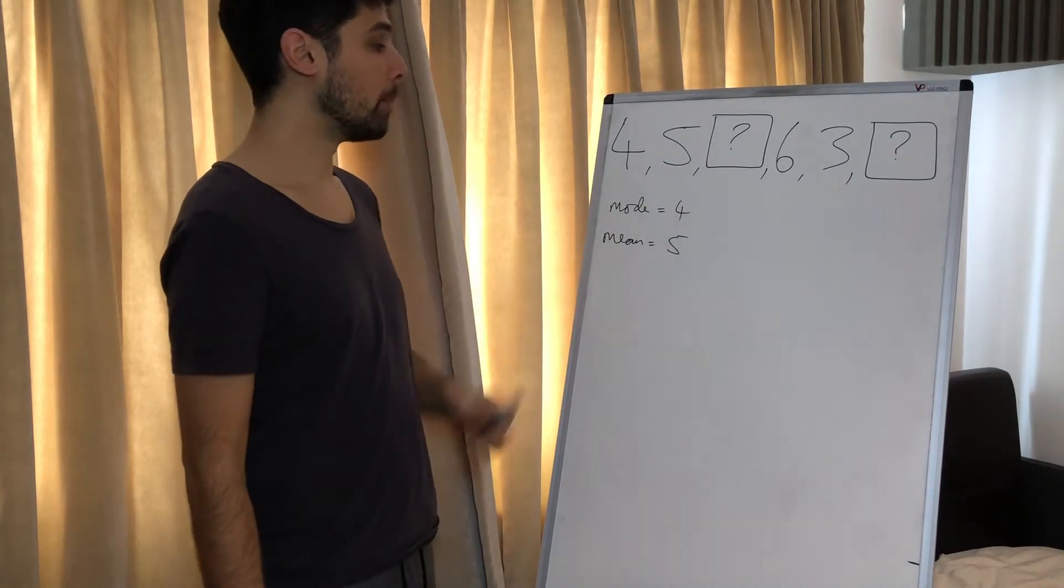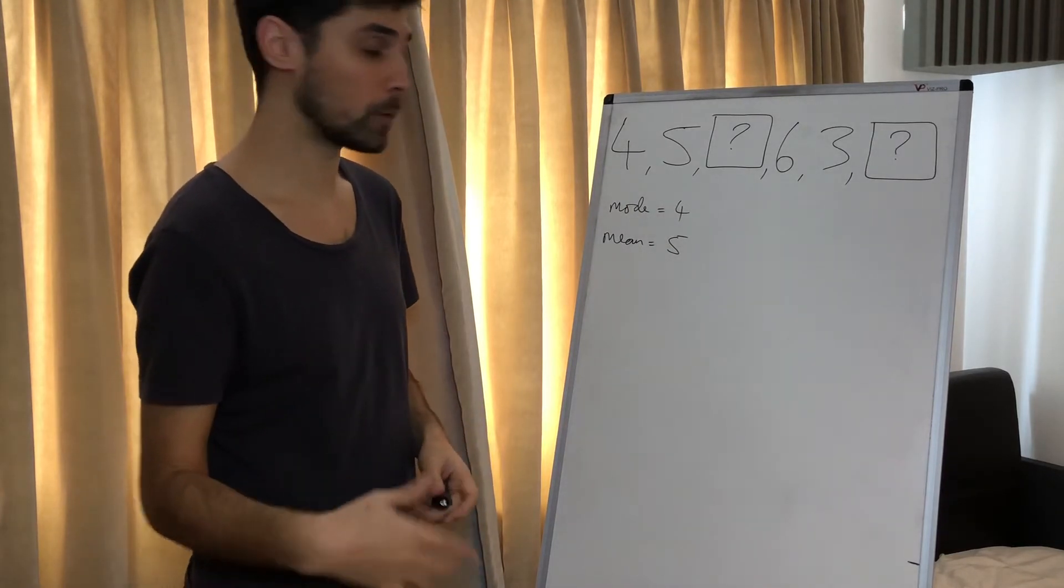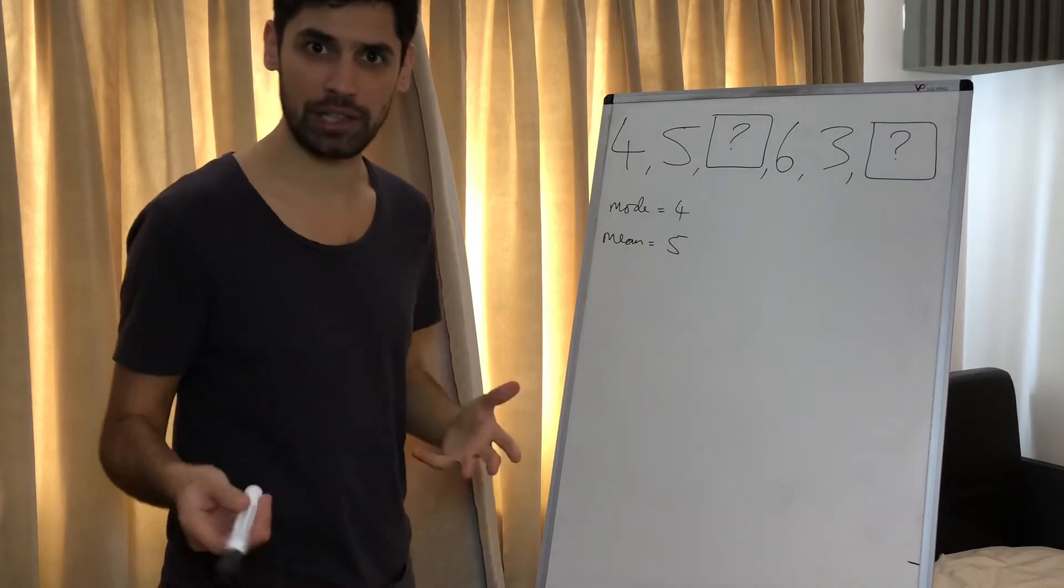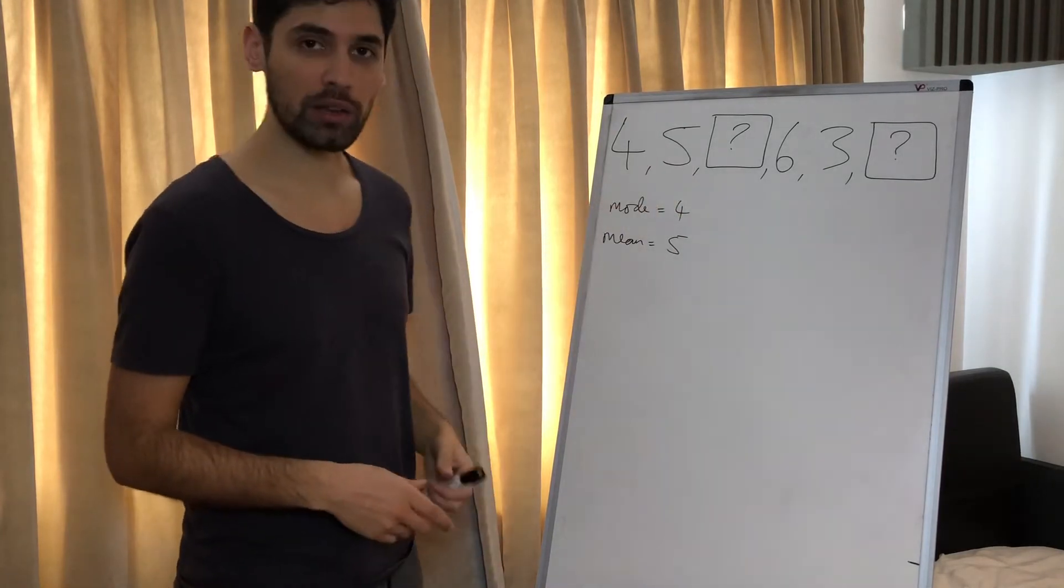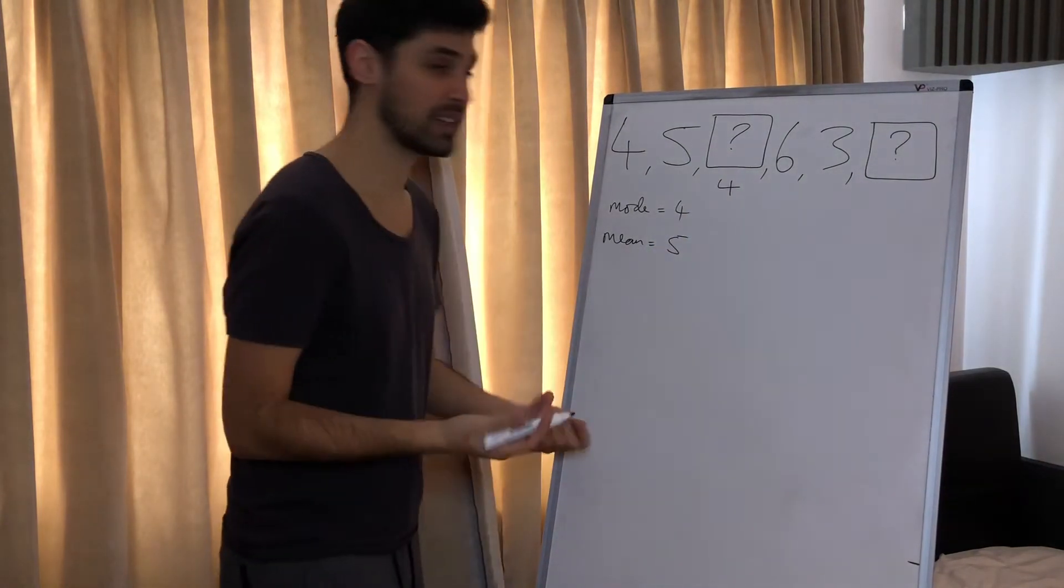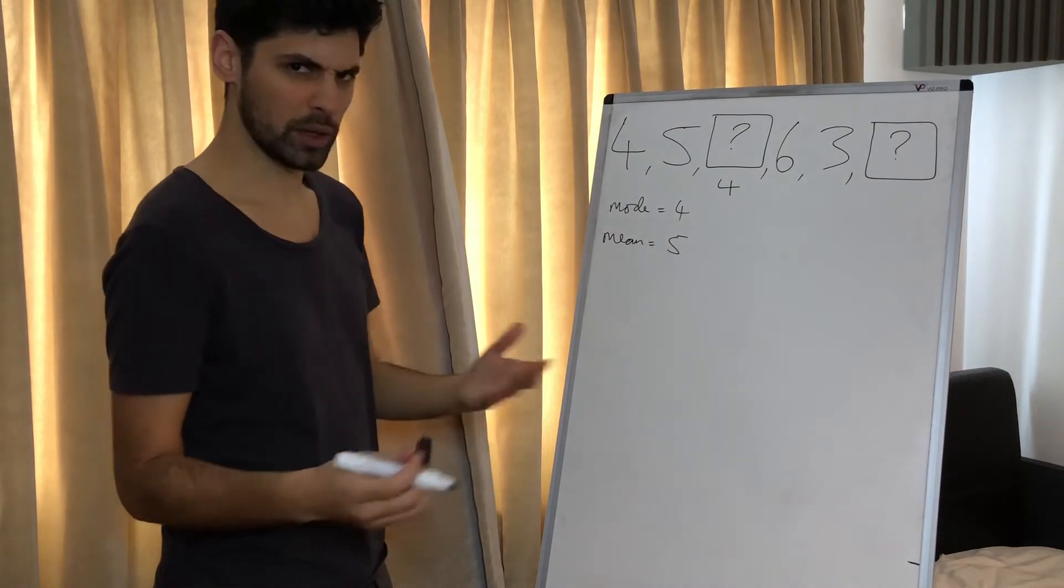The mode of these six numbers is four. That means the most frequent number is four. We only have one four currently, which means we have to have another. So we know that one of these unknowns is going to be four. That makes life a little easier for us. Let's say that one is four. Obviously these numbers aren't in order, so we don't need to worry about that.